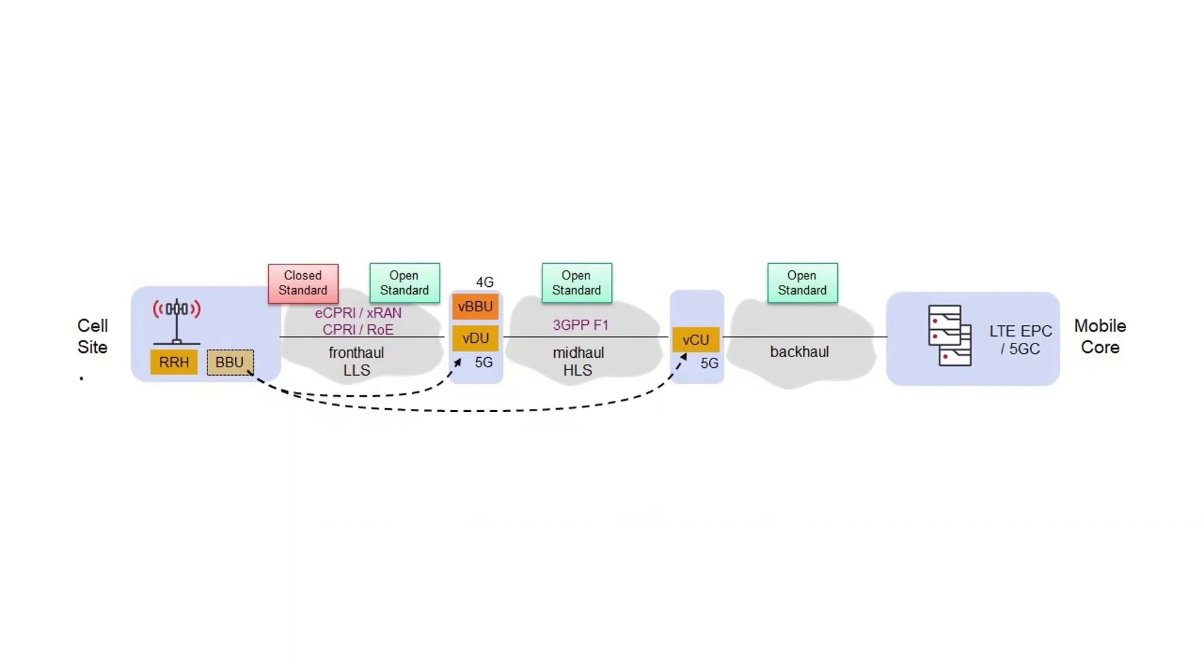How exactly that functionality is split between the DU and the CU is described as various options, one to eight. And the connection between the radio head and the DU is still called front hall. And the connection between the DUs and the CU is called mid hall or F1. And the connection between the CU and the core is called back hall.